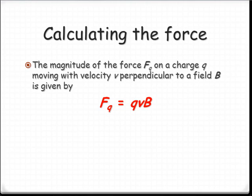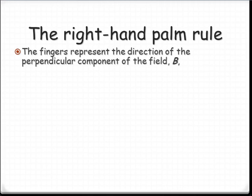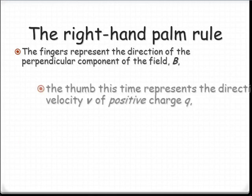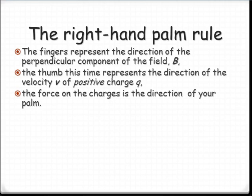Now, the way that we work this out in terms of the direction of the force is using a right hand palm rule. It's practically identical to the previous FBI rule, except now we're not using I, we're using the velocity. So fingers, again, representing the direction of the field. We've got the thumb. This time it represents the velocity, the direction that it's travelling, as opposed to the direction of the current. But you can think of it in much the same way, and then the palm is going to be the force.